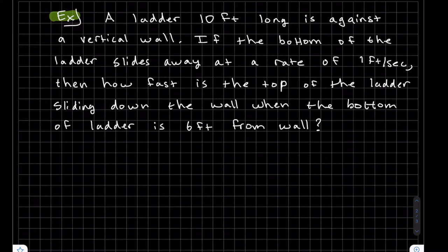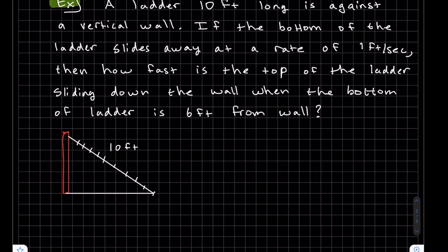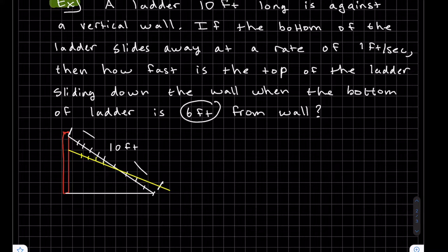We have this problem — it's a ladder against a vertical wall. I like to sketch what's happening, because you'll often need the sketch to come up with formulas that relate the two variables. So we have a vertical wall, a ladder leaning against it, and the ground. The ladder is 10 feet — that's a constant. But the ladder is going to slide, so the distance along the ground is not constant; it's changing.